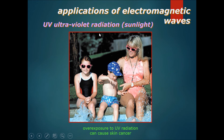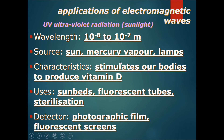UV, or ultraviolet radiation — you may have heard that overexposure to sunlight and UV radiation can cause skin cancer. The wavelength is from 10 to the power of minus 8 to 10 to the power of minus 7 meters, which is still quite short, meaning it has a high frequency and moderately high energy. Therefore, it can still penetrate your skin a little bit, which is why it mainly causes skin cancer.